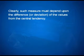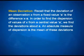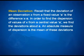For this purpose, we need some other measure of variability. Clearly, such a measure must depend upon the difference, that is, the deviation of the values from the central tendency. The important measures of dispersion which depend upon the deviation of the observations from a central tendency are mean deviation and standard deviation. To find the measure of dispersion from a fixed number A, we find the deviations about A. An absolute measure of dispersion is the mean of these deviations.